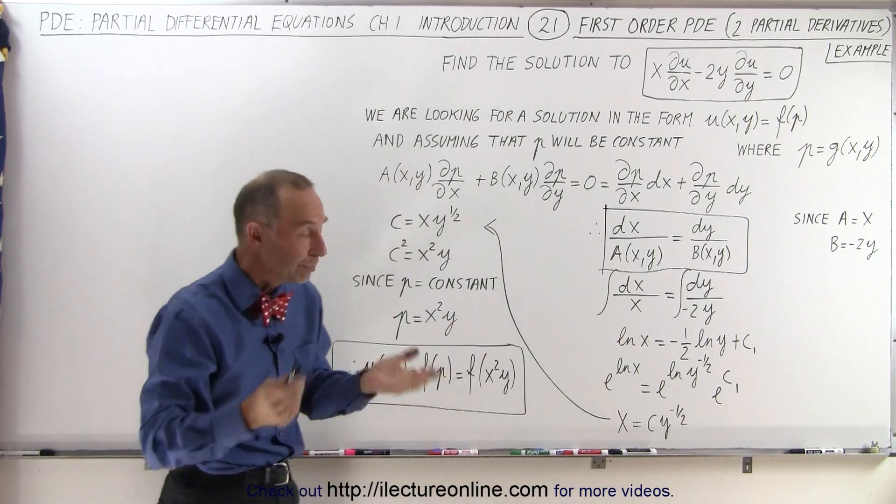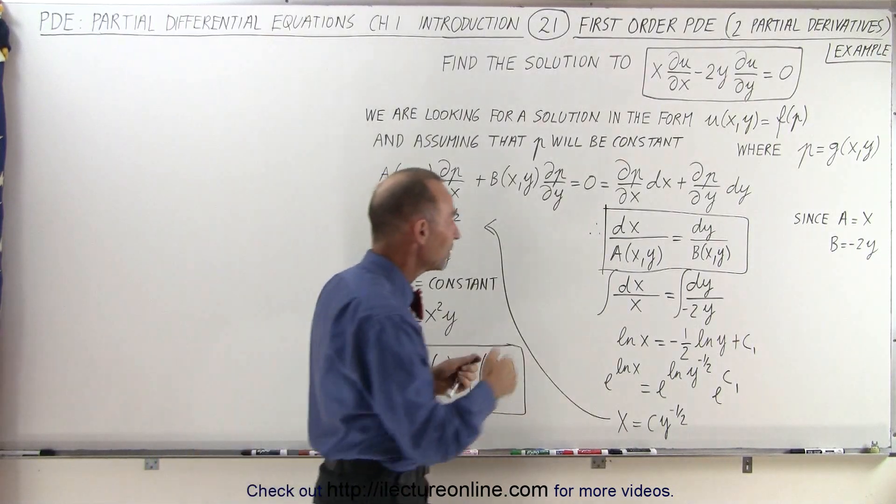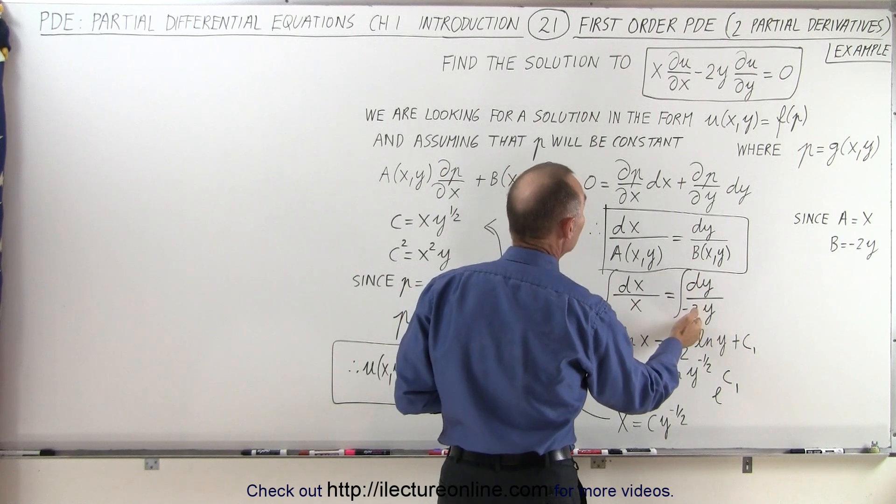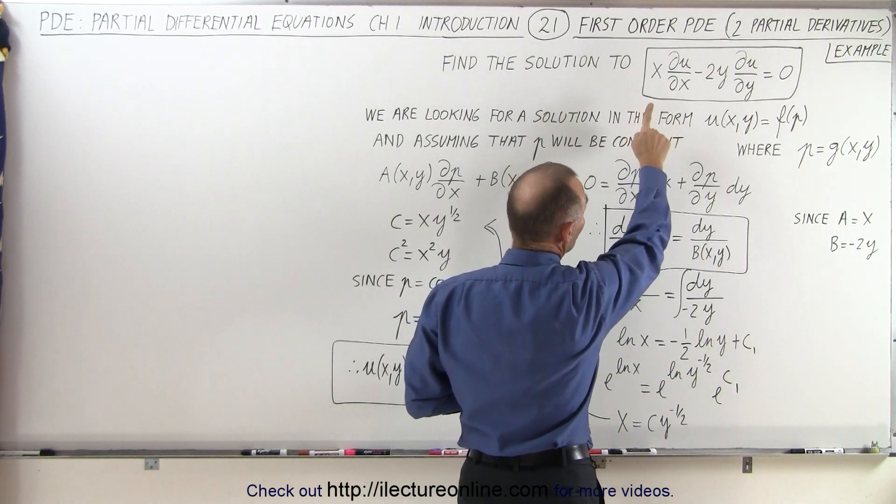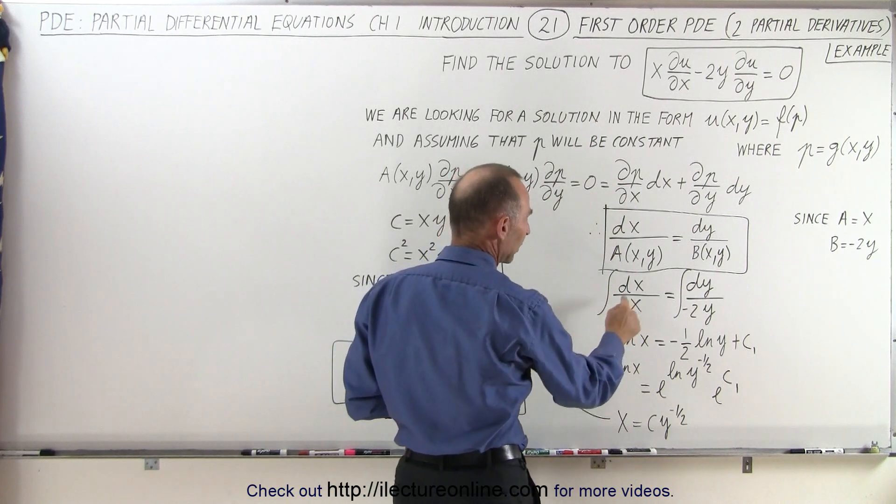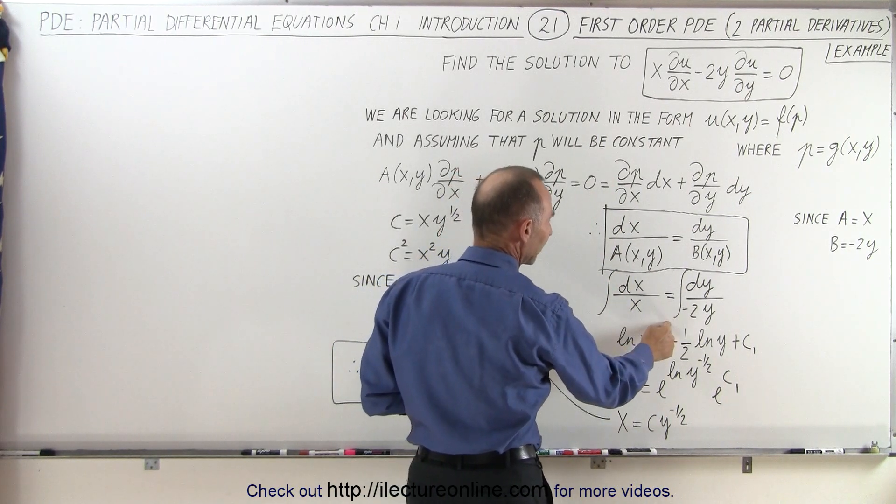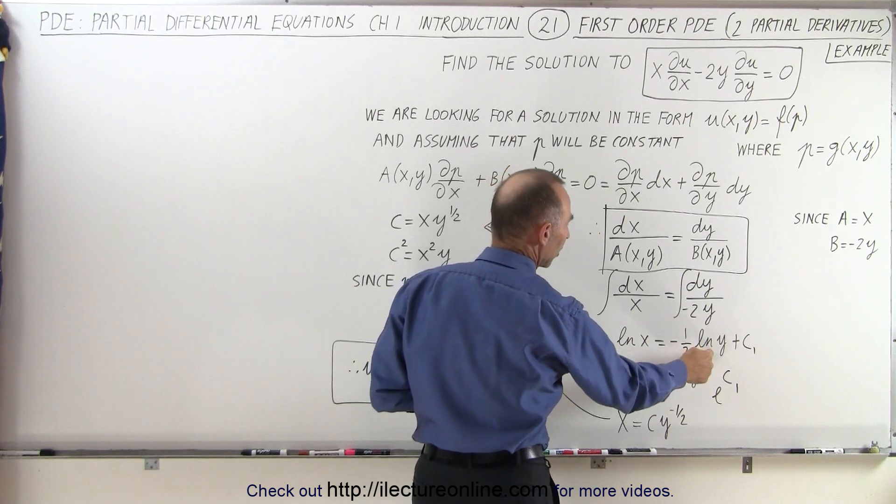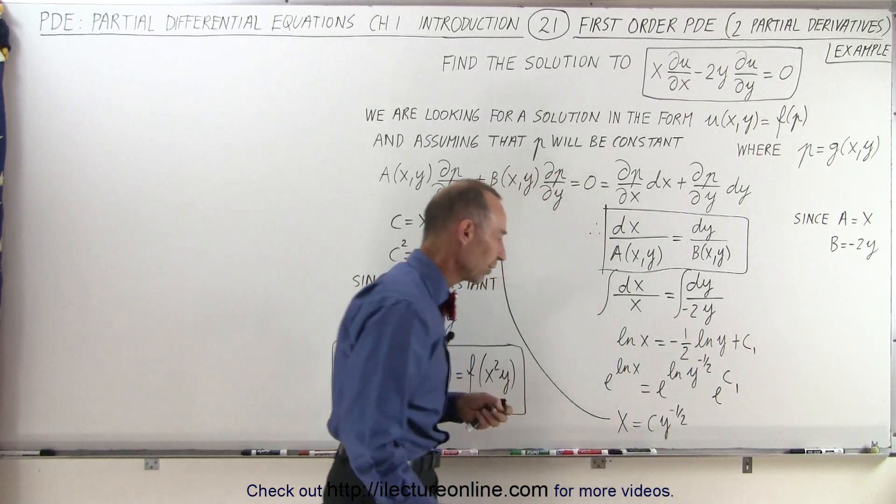Now if we integrate both sides, so we have dx divided by x and dy divided by minus 2y because that's what a and b were equal to, then we can see on the left side we end up with the natural log of x, on the right side we end up with minus 1 over 2 times the natural log of y plus a constant of integration.